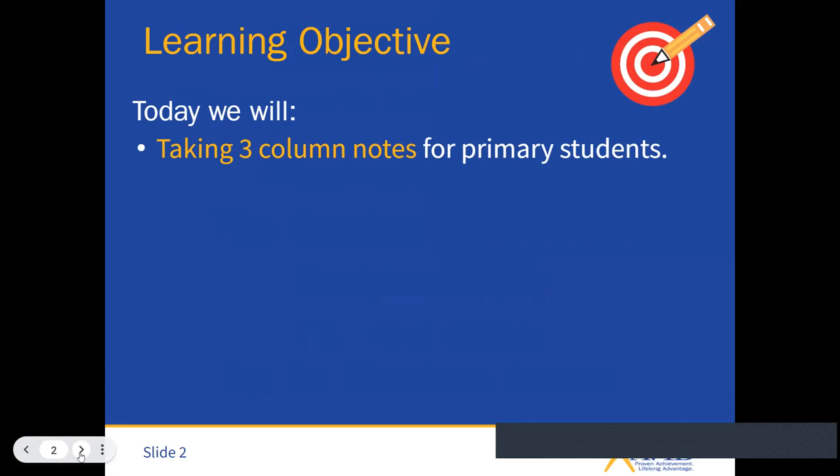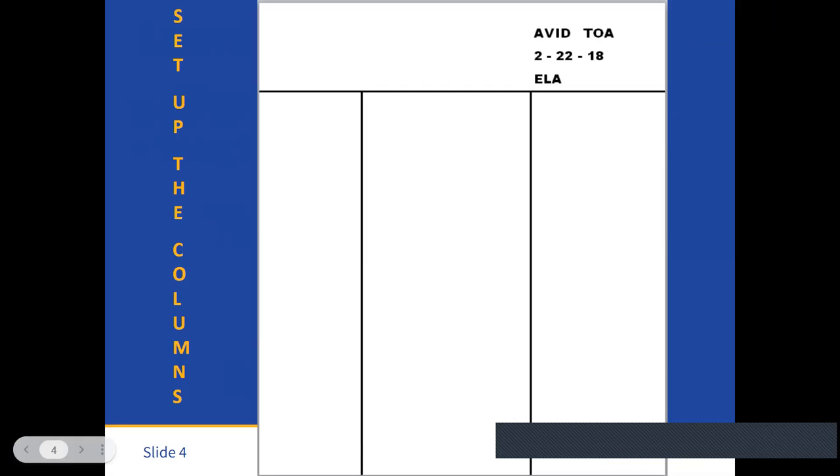And we want this to also be done with our primary students. The first thing you need to recognize is that three-column notes have a specific format. You can go ahead and have students fold their paper, and if they fold their paper twice, they would essentially have three columns. You can provide them a sheet of paper like this, or you can make this model on an anchor chart.